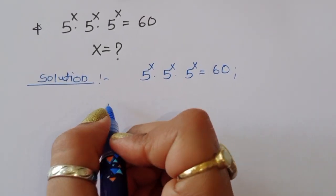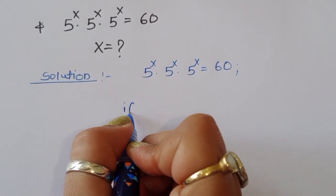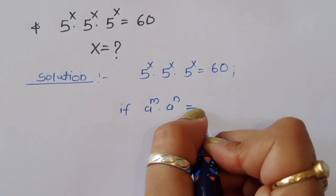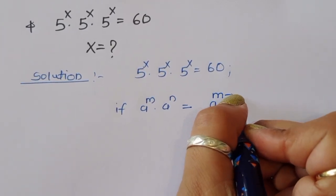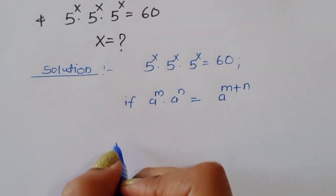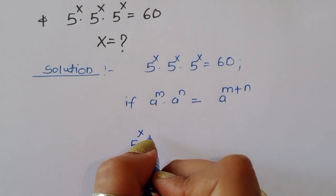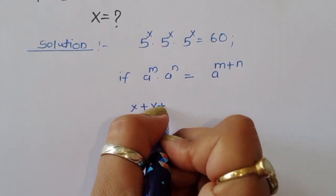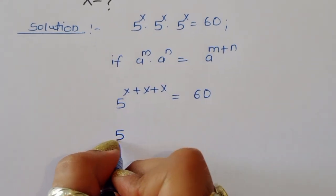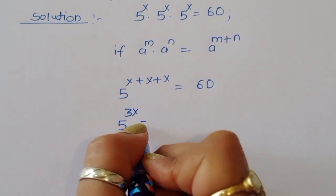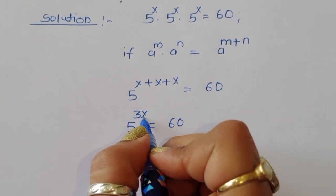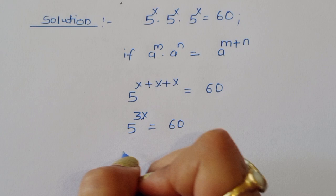We know the formula: if a^m times a^n is given, we can write this as a^(m+n). Using this formula here, we can write 5^(x+x+x) is equal to 60, so 5^(3x) is equal to 60.